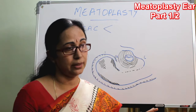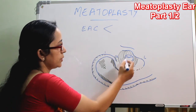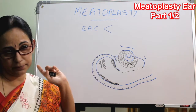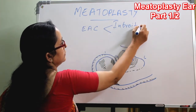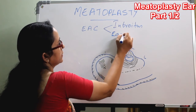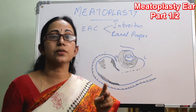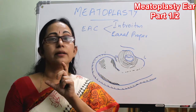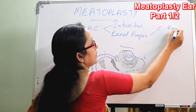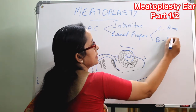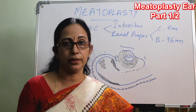Here comes the conchal cartilage, then the introitus, and this part is the external auditory canal proper, with the tympanic membrane at the end. The external auditory canal is divided into an introitus and the external auditory canal proper. Its total length is 24 millimeters, divided into an outer cartilaginous part of around 8 millimeters and an inner bony part of around 16 millimeters.